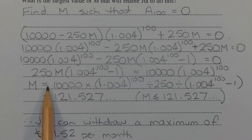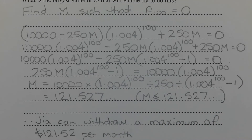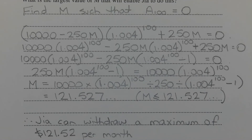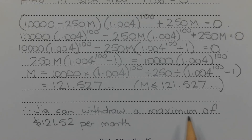Evaluating this expression gives 121.527... It's important to note that M must be less than or equal to 121.527. So we need to round down to the nearest cent — not round up, even though rounding up might appear required. If M were $121.53, GIA could not make at least 100 withdrawals. So rounding down, GIA can withdraw a maximum of $121.52 per month.